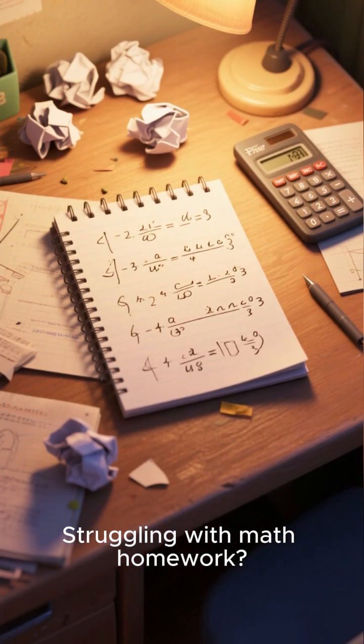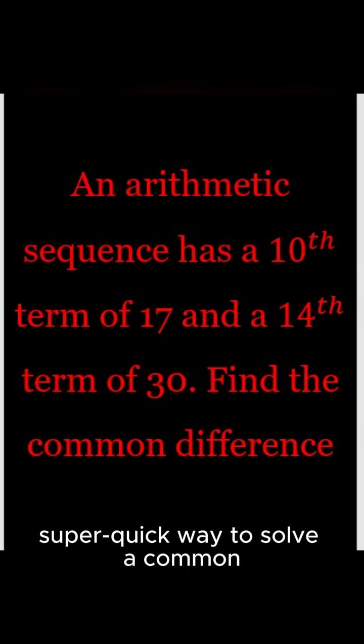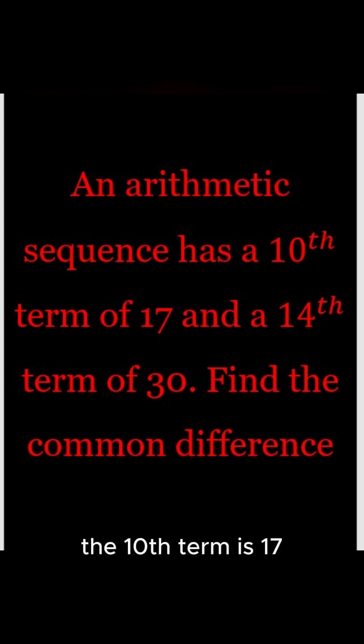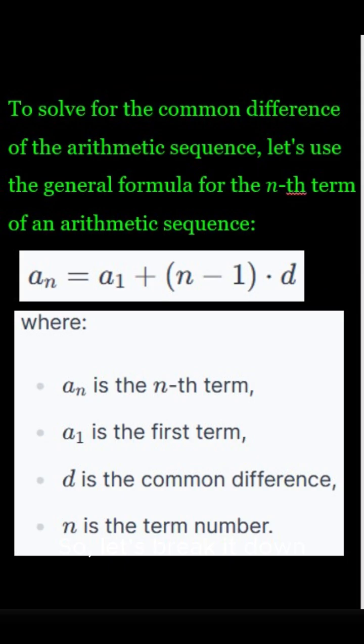Struggling with math homework? Let me show you a super quick way to solve a common problem that stumps a lot of people. You've got an arithmetic sequence. The 10th term is 17 and the 14th term is 30. How do you find the common difference?